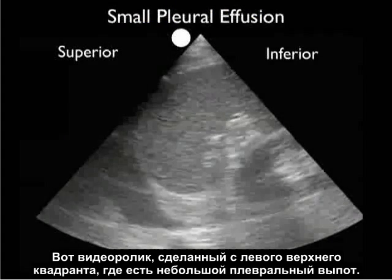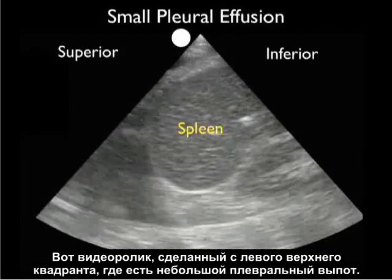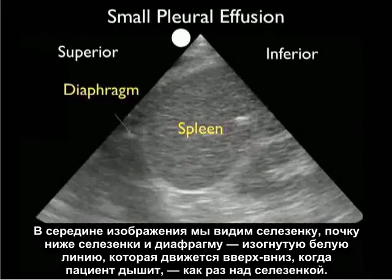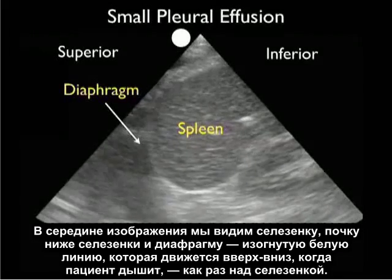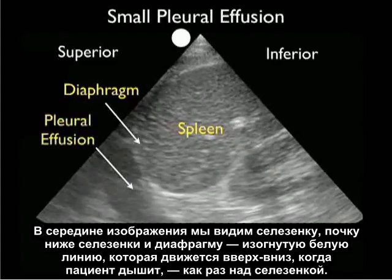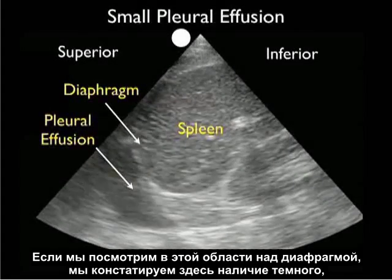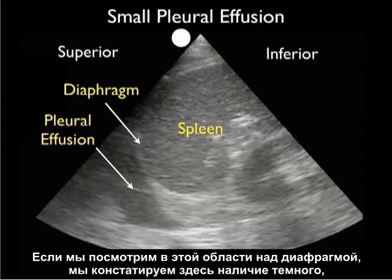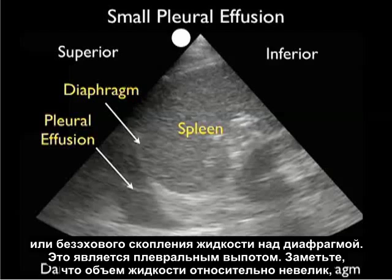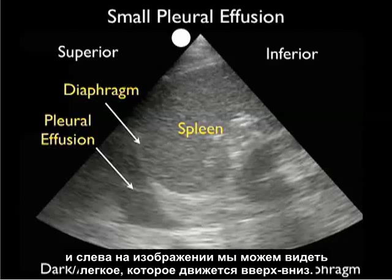Here's a video clip showing a small pleural effusion as taken from the left upper quadrant view. We see the spleen in the middle of the image, the kidney inferior to the spleen, and the diaphragm — the curving white line moving up and down as the patient breathes — right above the spleen. As we look into that area above the diaphragm, we appreciate the presence of a dark or anechoic fluid collection above the diaphragm, representing a positive pleural effusion. Notice the amount of fluid is relatively small and we can actually see the lung moving up and down to the left of the image.